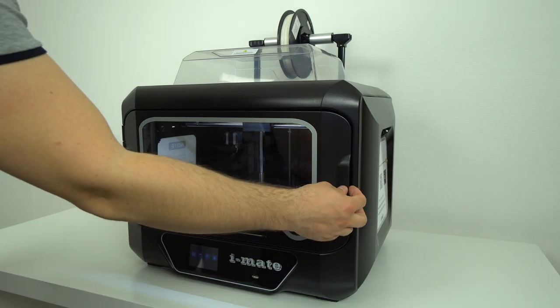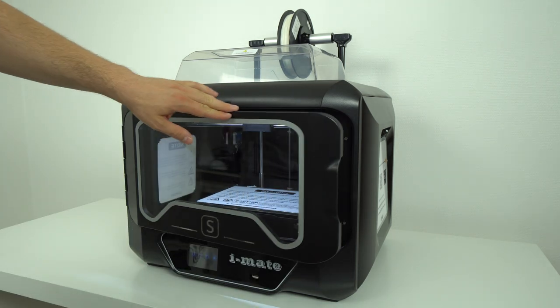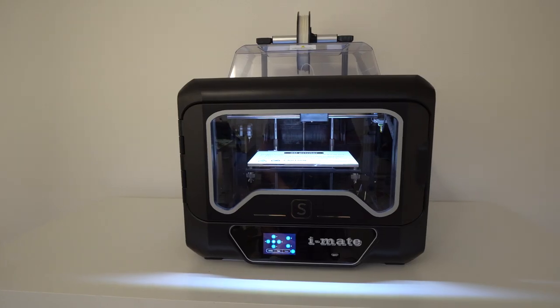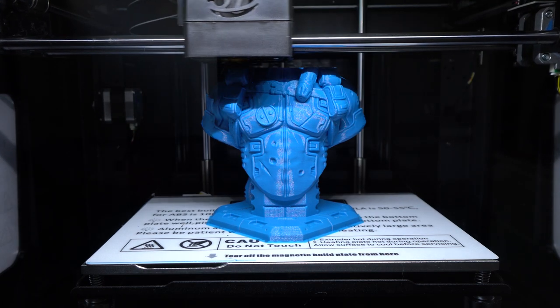On the front side of the printer there is a wide magnetic door with a transparent plexiglass that gives you nice and wide access to your prints. Inside the enclosure there is a built-in LED light so you can monitor the printing process even in the dark.